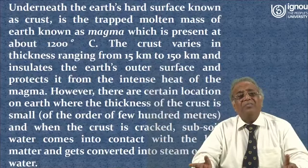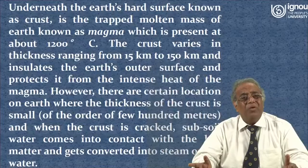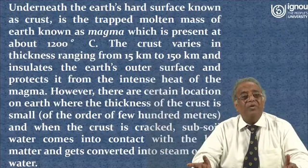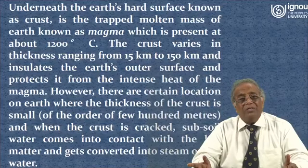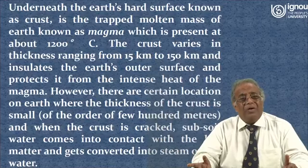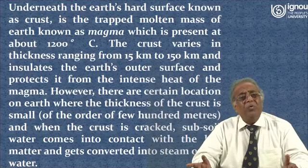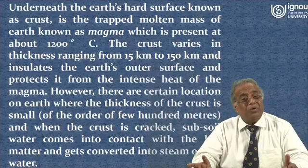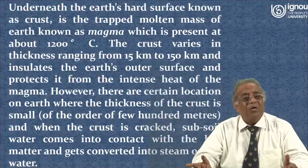Underneath the earth's hot surface known as the crust is the trapped molten mass of earth known as magma, which is present at about 1200 degree centigrade. The crust varies in thickness ranging from 15 kilometer to 150 kilometer and insulates the earth's outer surface, protecting it from the intense heat of the magma. However, there are certain locations where the thickness of the crust is small, of the order of a few hundred meters, and when the crust is cracked, subsoil water comes into contact with the hot matter and gets converted into steam or hot water.